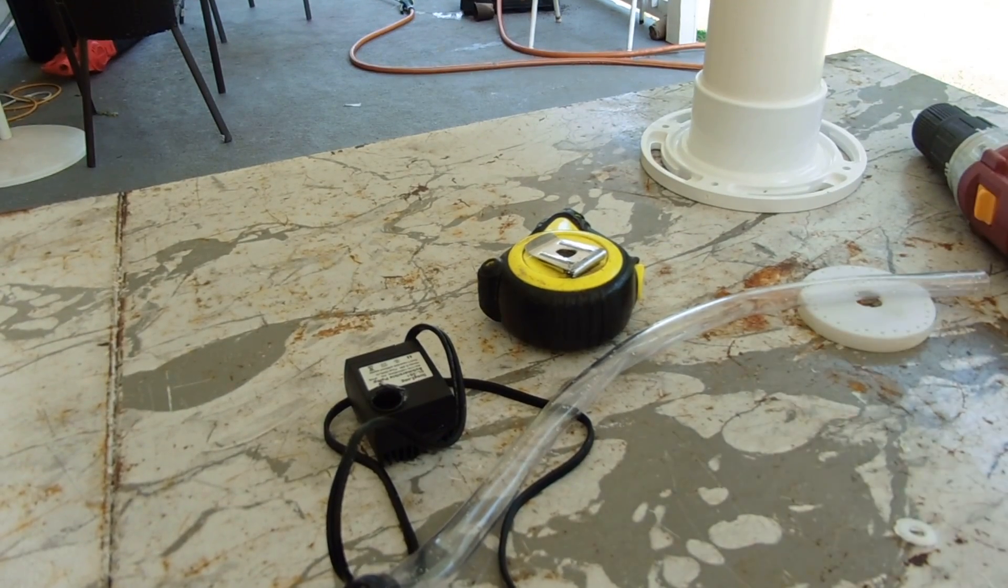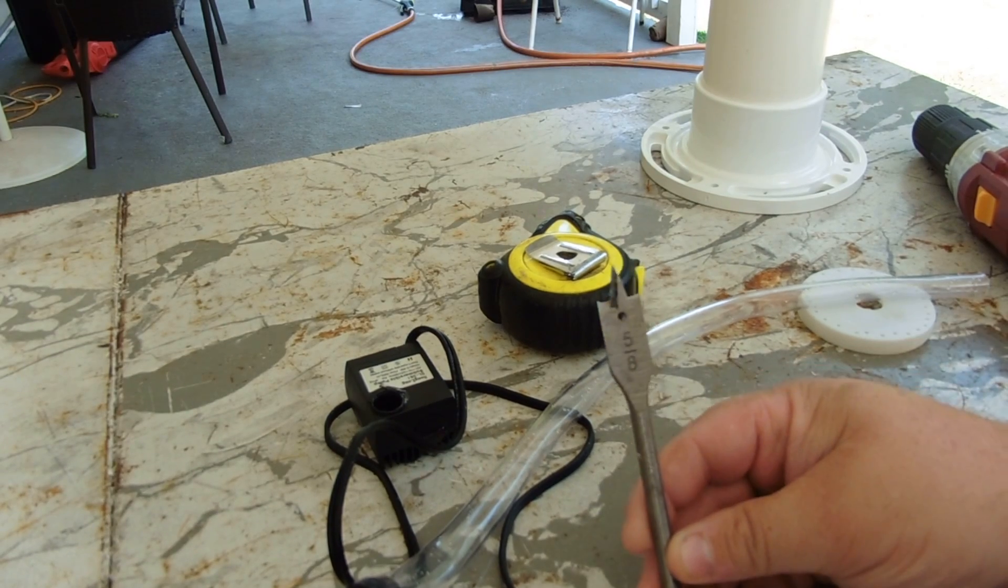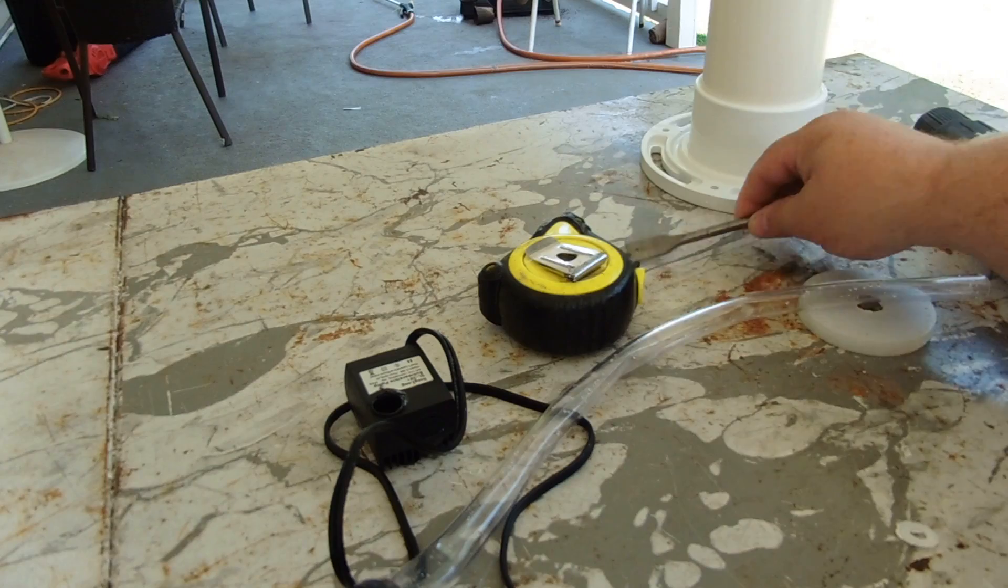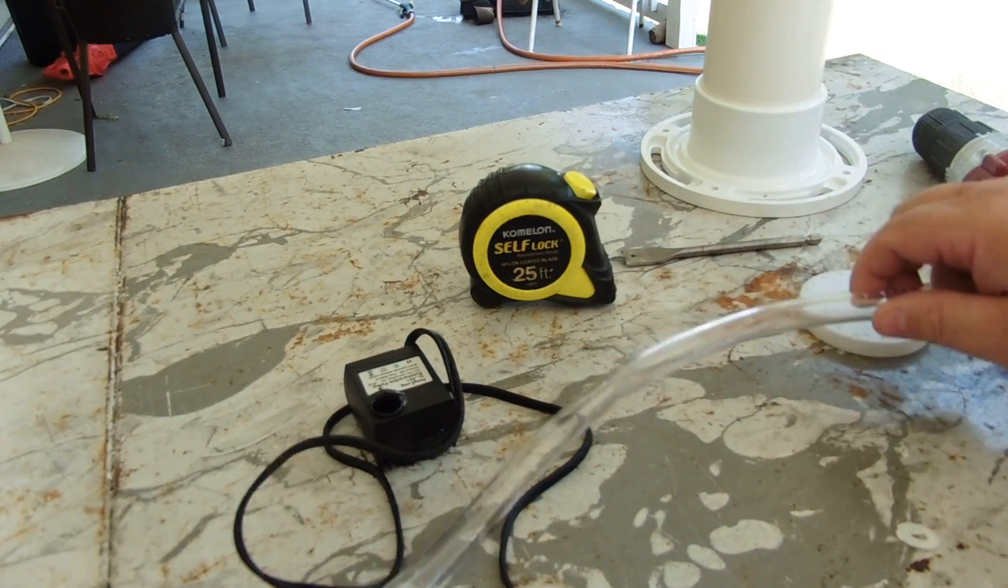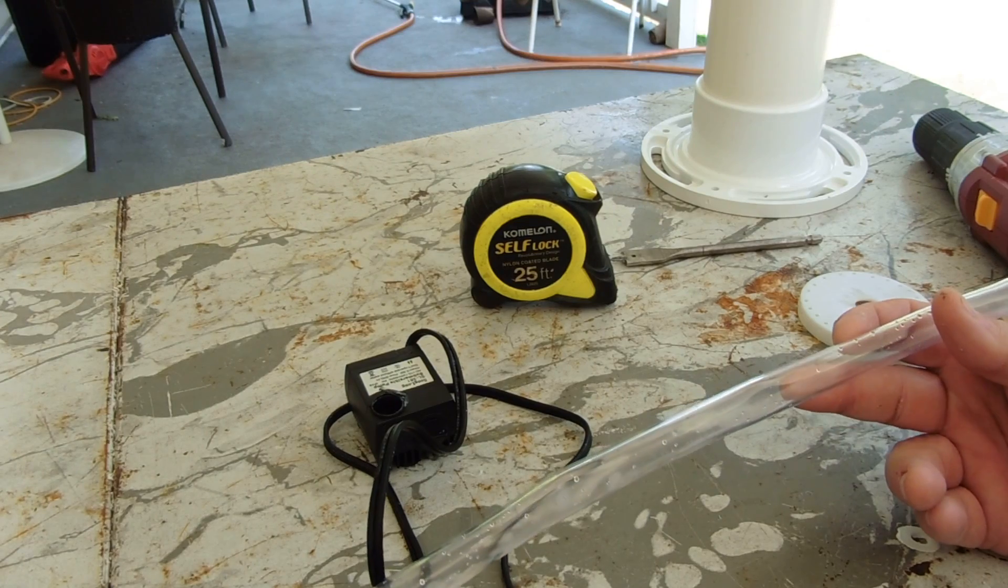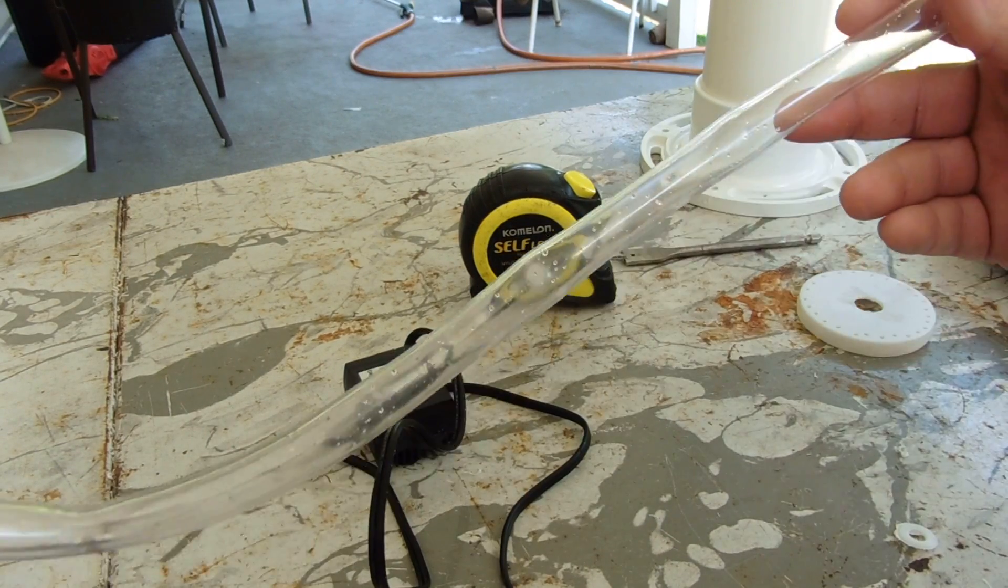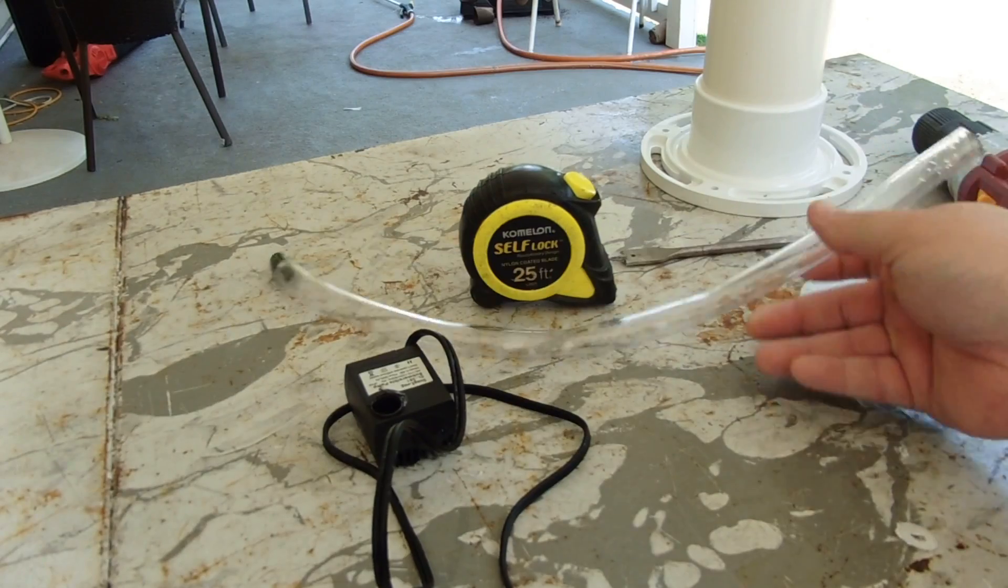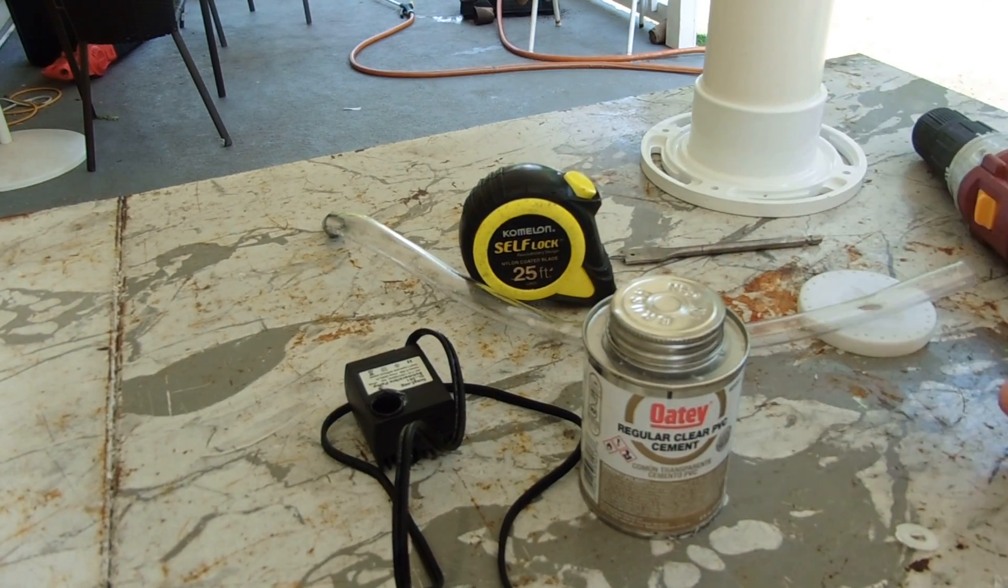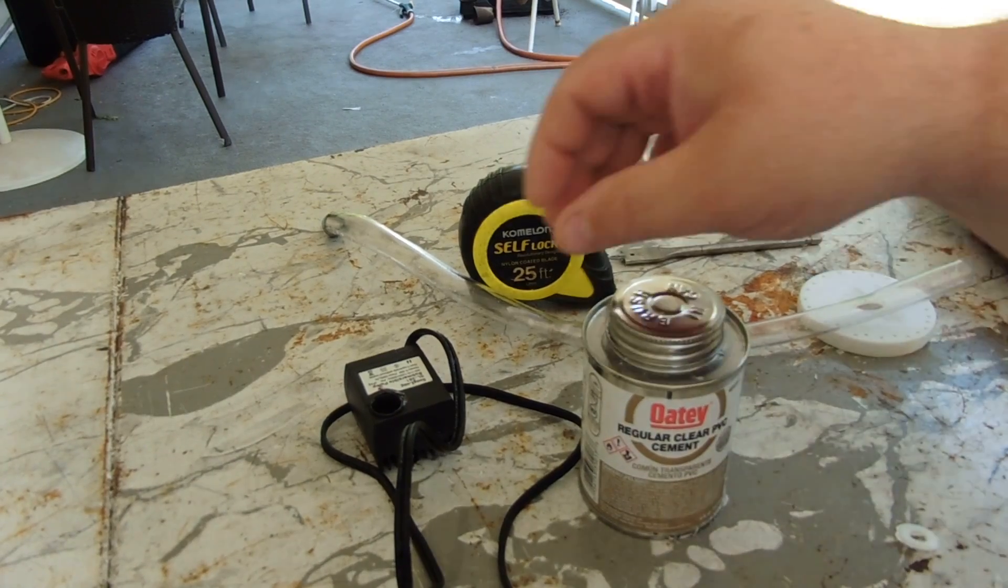For this, you're going to need a 5/8 paddle bit, you're going to need a tape measure, you're going to need 18 inches of clear half-inch flexible hose. You're also going to need some PVC cement and your pump.